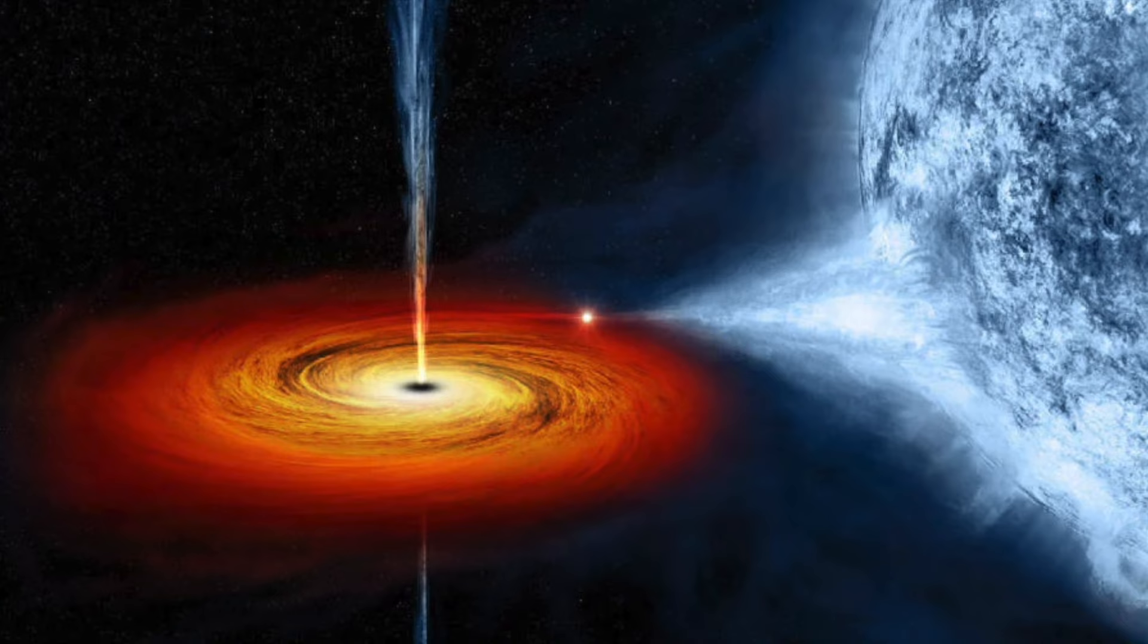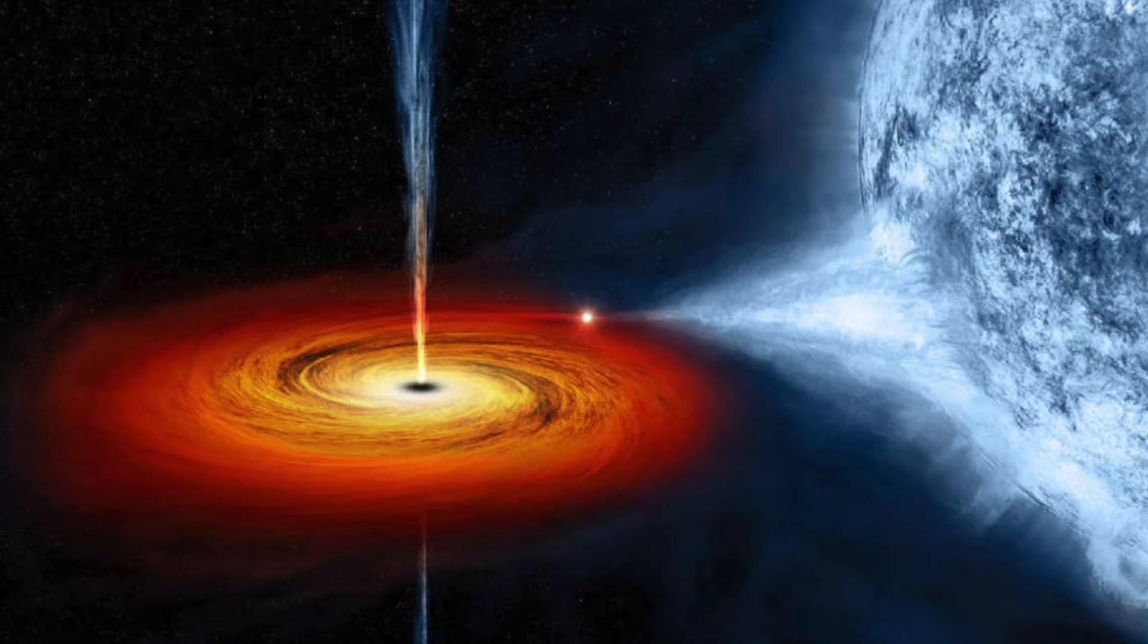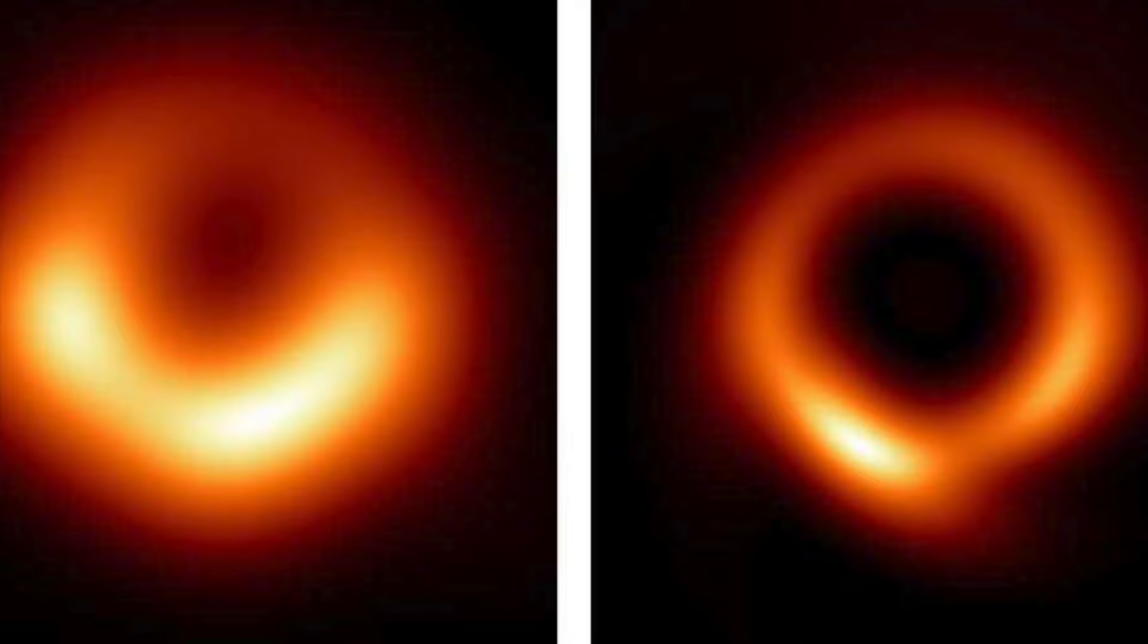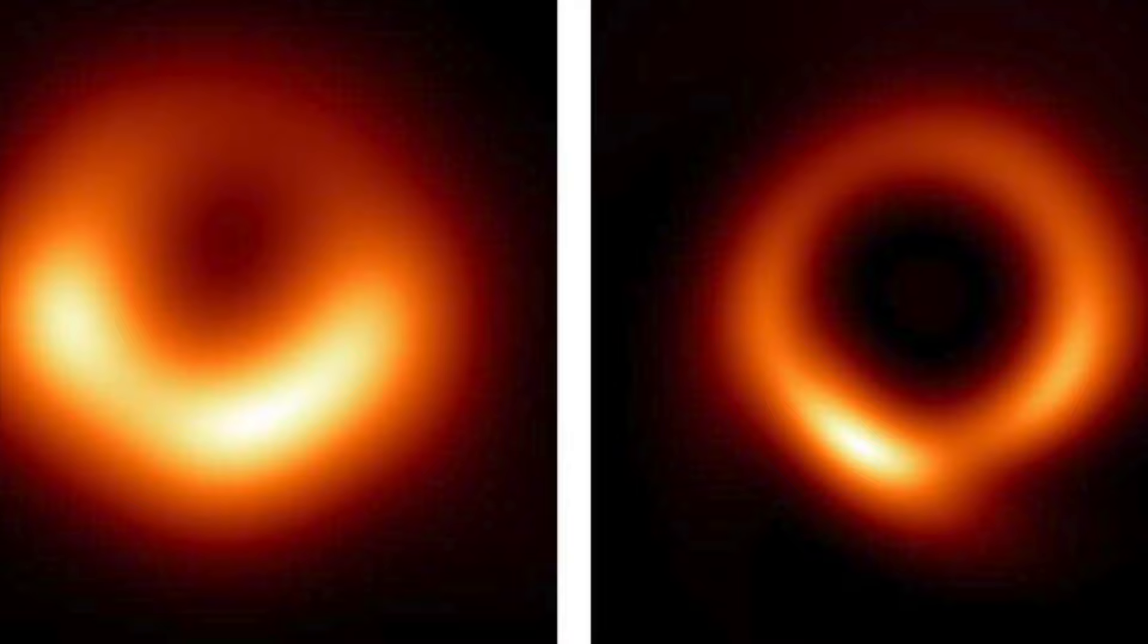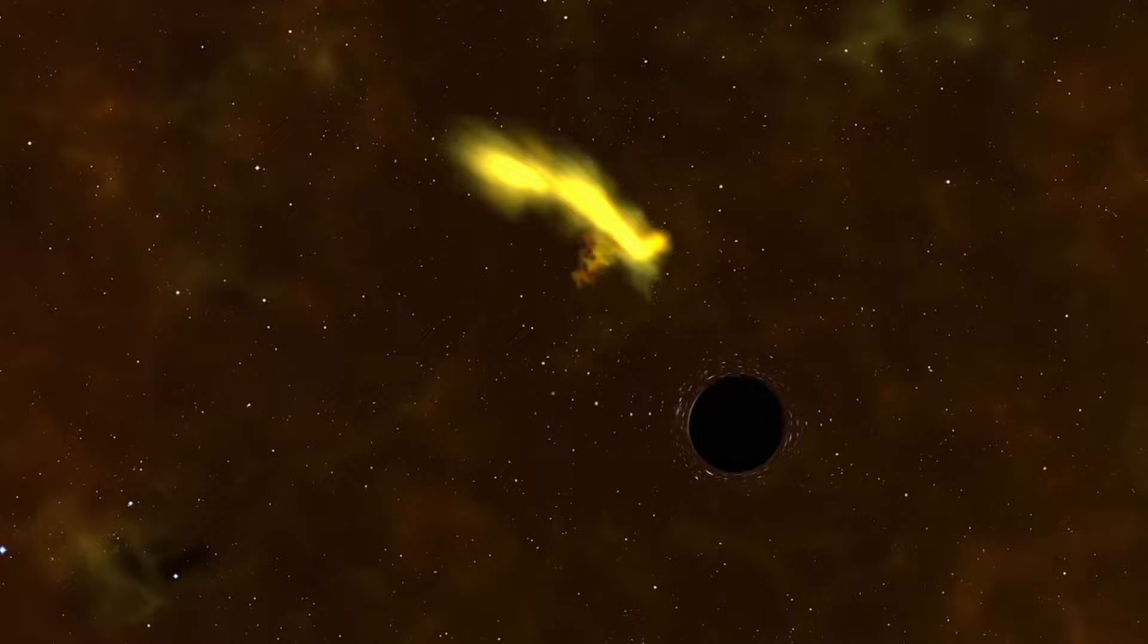In summary, the S-stars near Sagittarius A-star have provided invaluable insights into the properties of the supermassive black hole, while G2's passage and subsequent observations have sparked a wealth of hypotheses and discussions about the nature of this intriguing region at the center of the Milky Way.